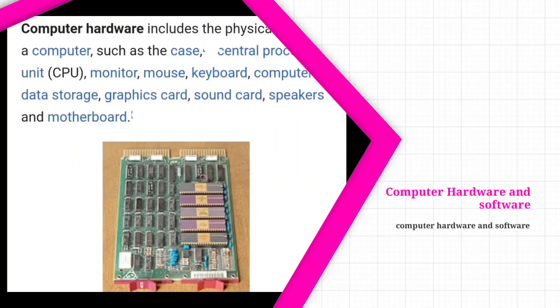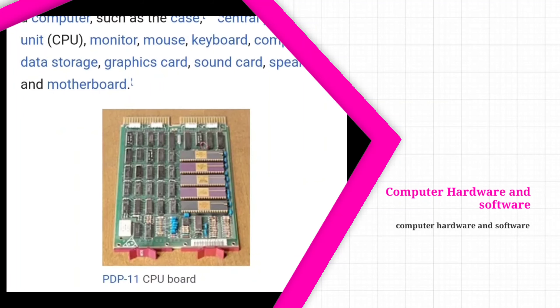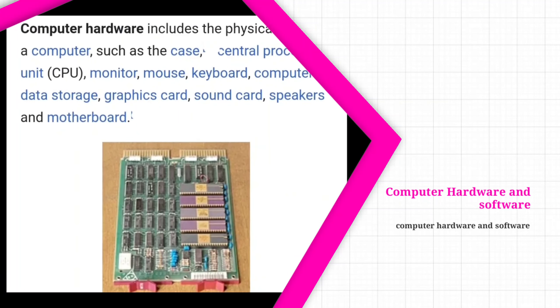In order for a computer to produce useful output, the hardware and software must work together. Both hardware and software are necessary — both are complementary to each other. Nothing useful can be done with computer hardware on its own, and software cannot be utilized without supporting hardware.